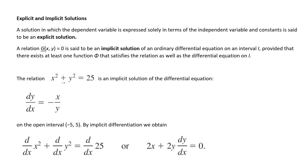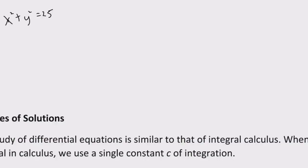So for example, the relation x squared plus y squared equals 25, that's a circle, radius 5, is an implicit solution of the differential equation dy/dx equals negative x over y. Okay, let's verify that, let's verify that real quick. So let me get some, let me get out, I guess, my paper.